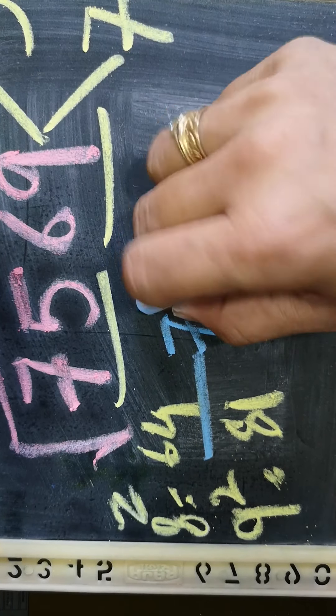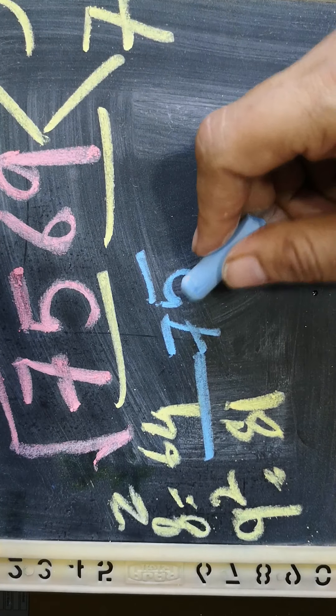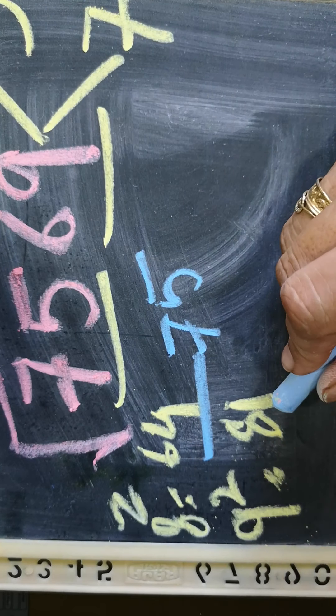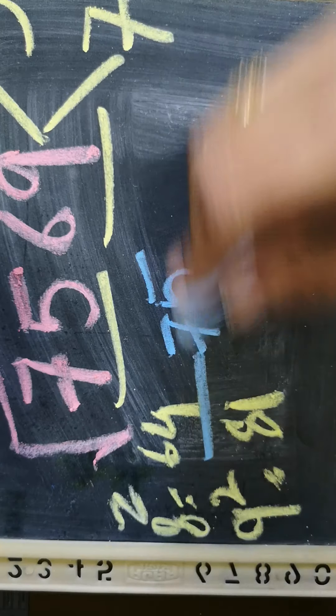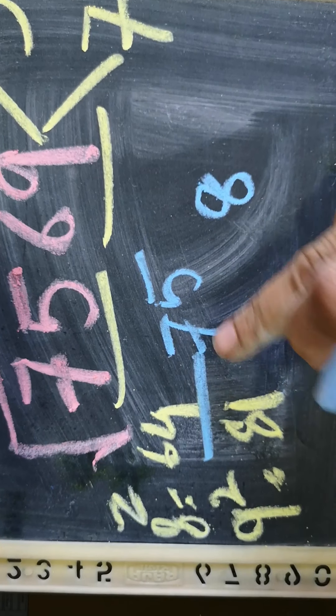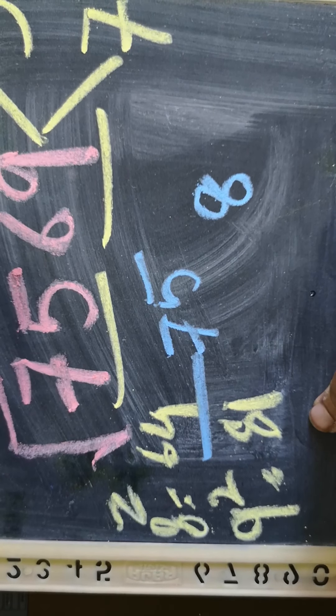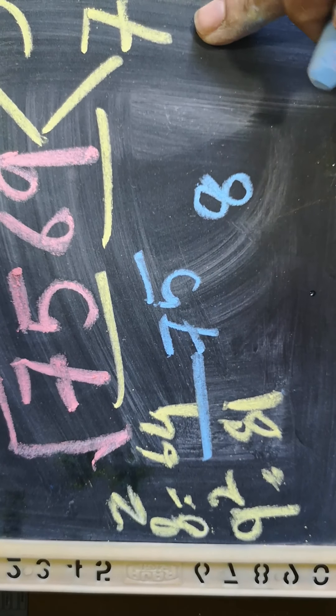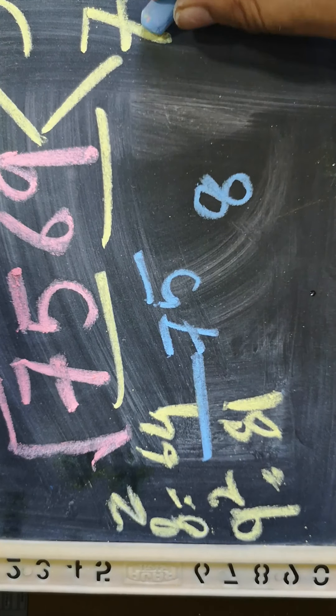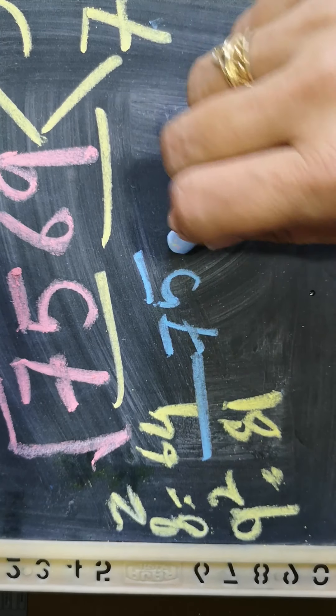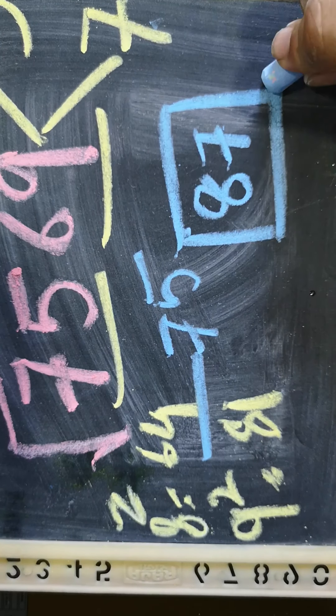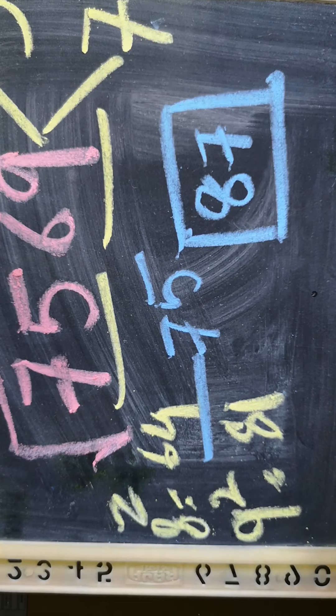So 75, which is the closest? 64 is close or 81 is close? Which is the closest? 81 is the closest. So we are going to take this digit, 7. So 87 is the answer.